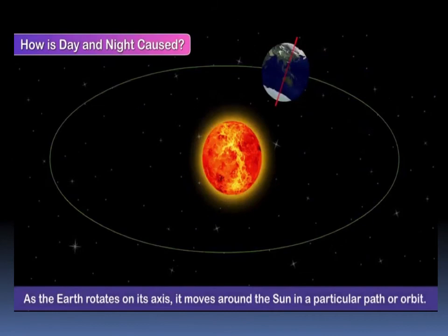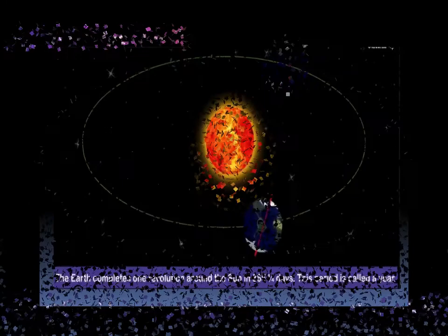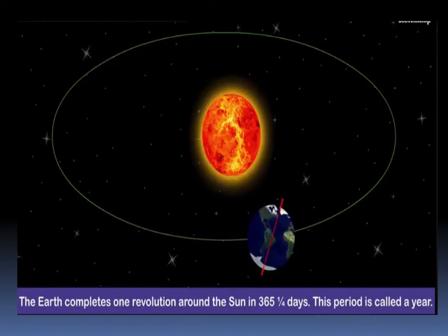As the earth rotates on its axis, it moves around the sun in a particular path or orbit. The earth completes one revolution around the sun in 365 and 1/4 days. This period is called a year.